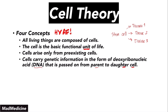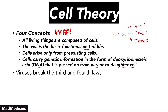Now, there are certain things you need to know about cell theory, and one thing you cannot move forward without understanding is that there are exceptions to cell theory. This theory was composed when we had a general understanding of eukaryotic and prokaryotic cells, but there was an organism we didn't know about at the time — viruses. Viruses break the third and fourth concepts: they do not need to come from pre-existing cells, and they do not need to carry DNA.